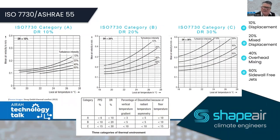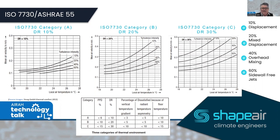The ASHRAE 7730 velocity movements are created around the draft rating, which is a full calculation of floor temperature, radiant temperature, velocity gradients, terminal velocities, and turbulence intensity. There are three ISO categories: Category C is a draft rating of 30%, Category B is 20%, and Category A is 10%. These relate to the types of air diffusion equipment and systems being installed.